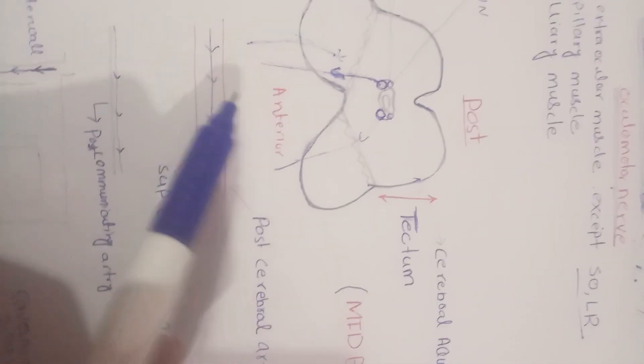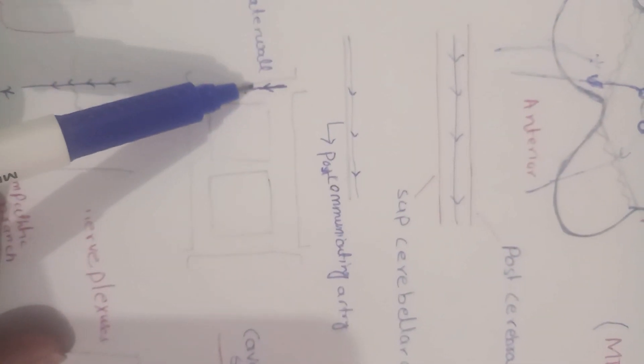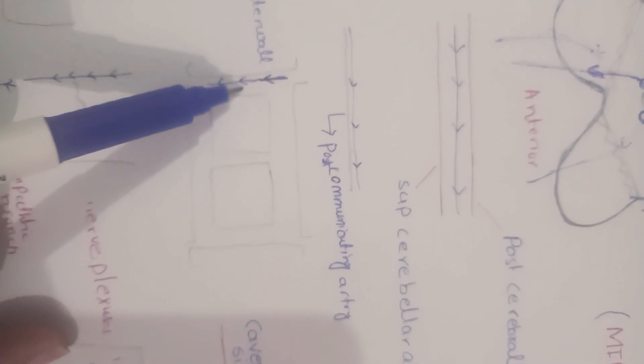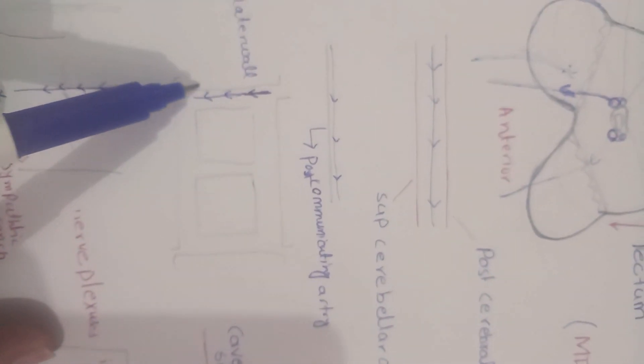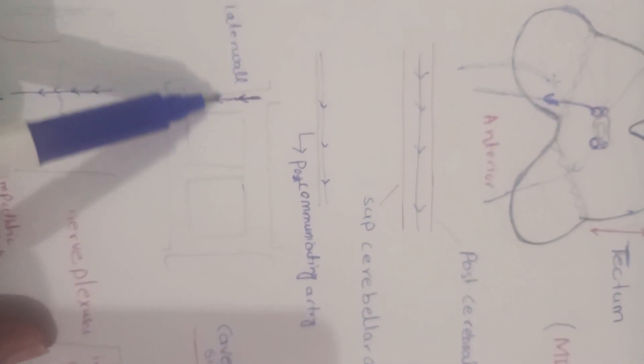From the cerebral peduncle, it enters into the cavernous sinus, below the oculomotor nerve, along the lateral aspect of the cavernous sinus.